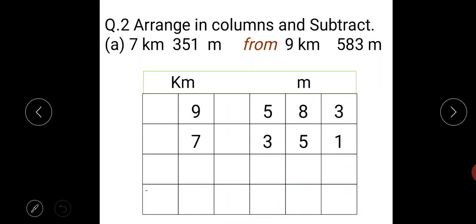Now question number 2nd is, arrange in columns and subtract. So in this we have to subtract the smaller unit from the bigger one. Here 7 kilometre and 9 kilometre. 9 kilometre is bigger. So we have to subtract 7 from 9.